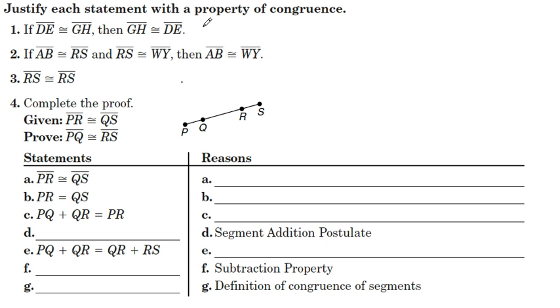Let's look at number one. It says if segment DE is congruent to GH, then GH is congruent to DE. That is a perfect example of the symmetric property.